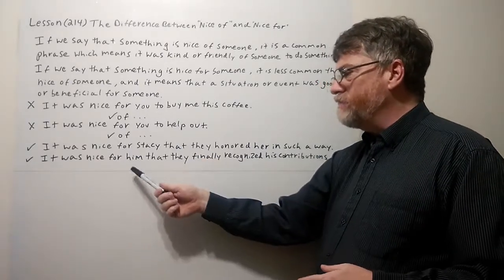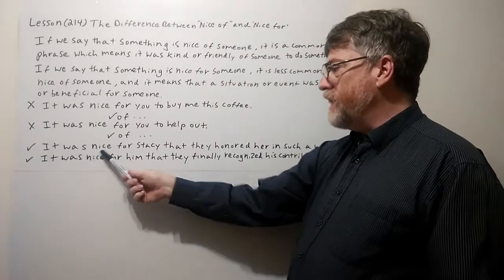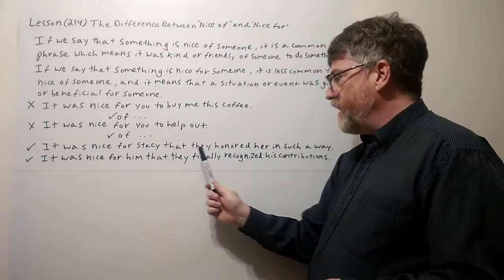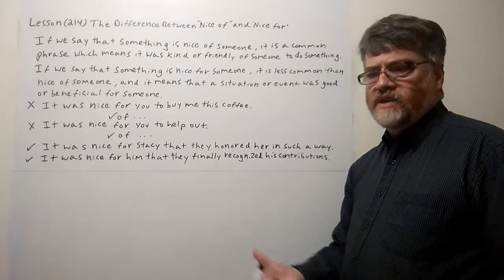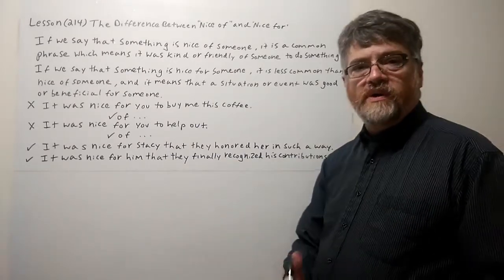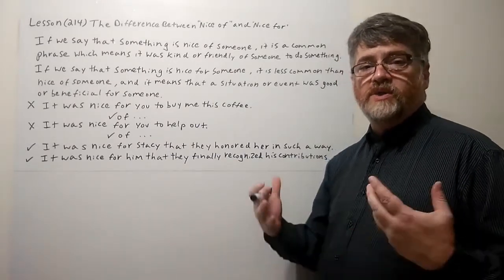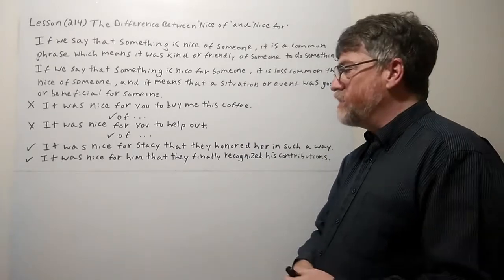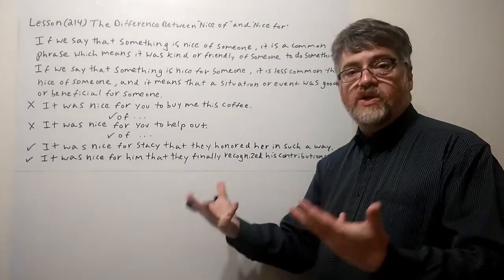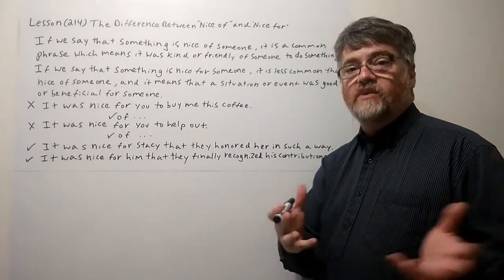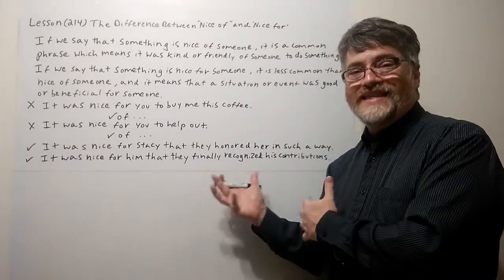And here's two examples where for would be suitable. It was nice for Stacy that they honored her in such a way. Maybe they gave her some gift or some award that she wasn't expecting. So this was a nice event or a nice situation probably that she wasn't expecting. So it was nice for her that this happened.